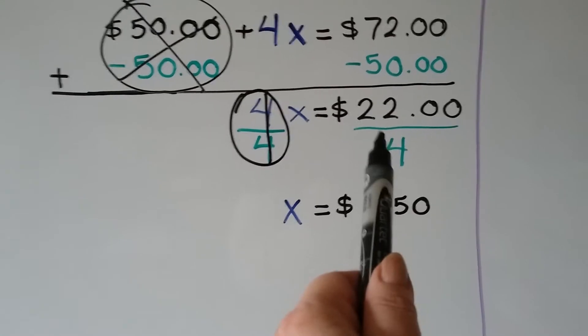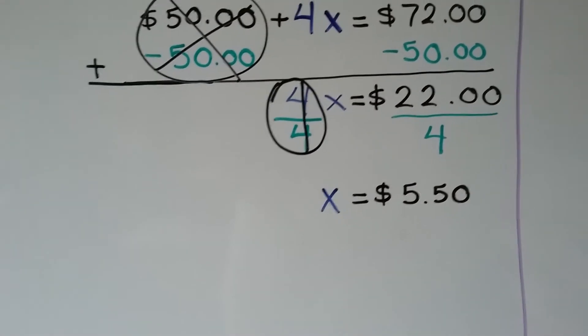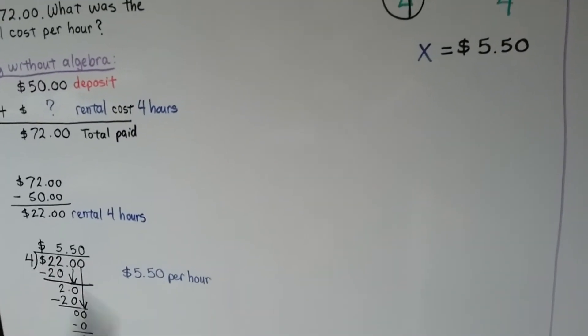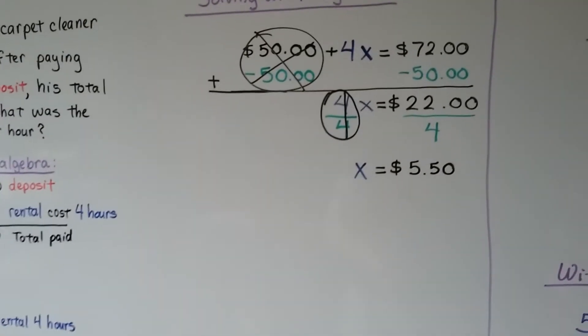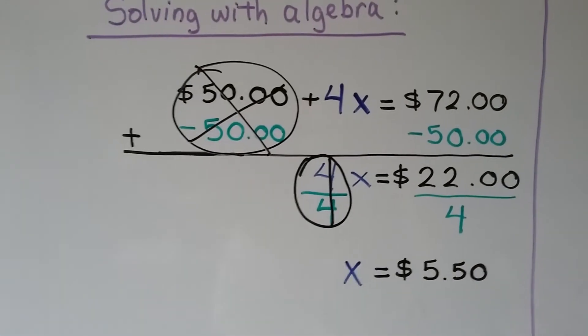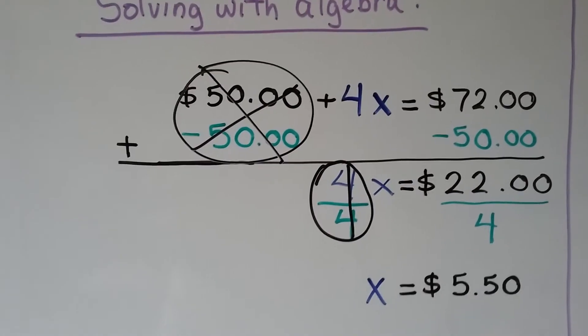And on this side, when we divide the $22 by 4, we get $5.50. Just like we did over here. We divided $22 by 4. Same thing. So we know x is equal to $5.50. That's how much he paid per hour for that carpet shampooer or cleaner.